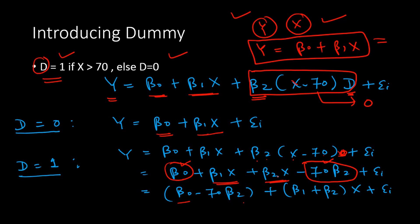We take x common from the two x-terms — β₁x and β₂x — giving a slope coefficient of β₁ + β₂ and an intercept of β₀ − 70β₂. So this is the equation when the dummy variable takes the value of 1. We now have two equations — two pieces of equations for two pieces of data. We will now estimate these using the data.